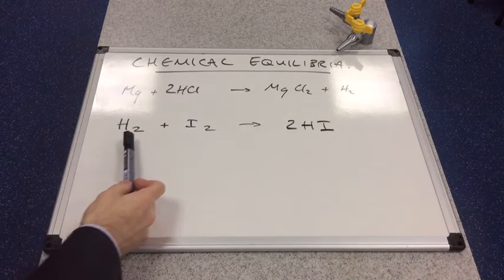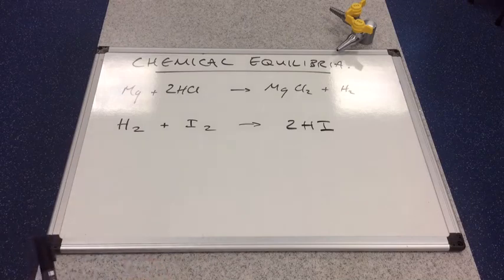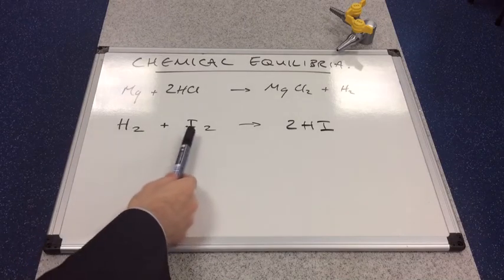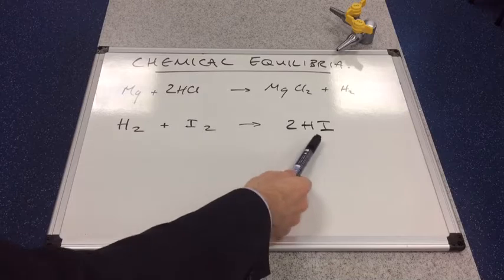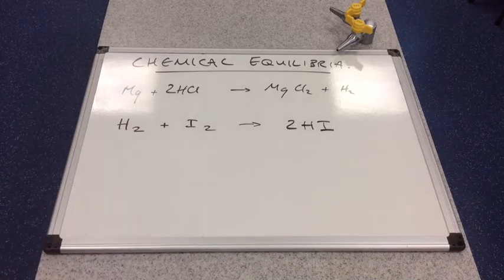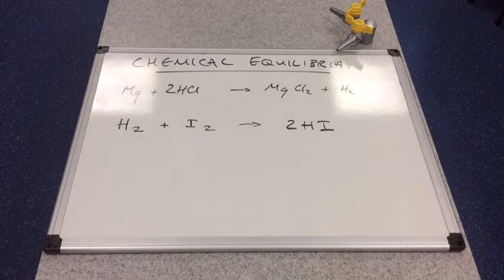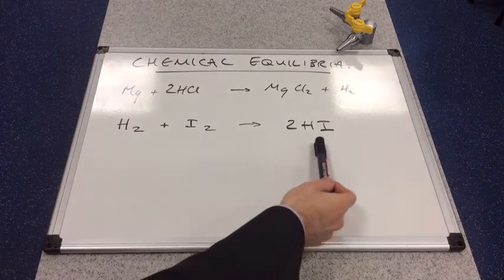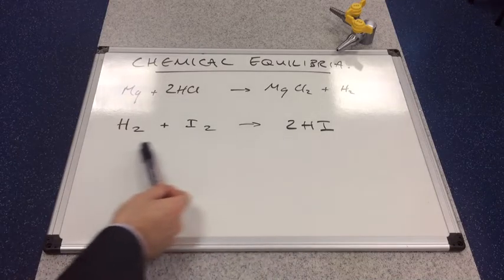We have a look at this reaction now. This is the reaction between hydrogen and iodine, and the product is hydrogen iodide. This reaction is actually able to move in the opposite direction.